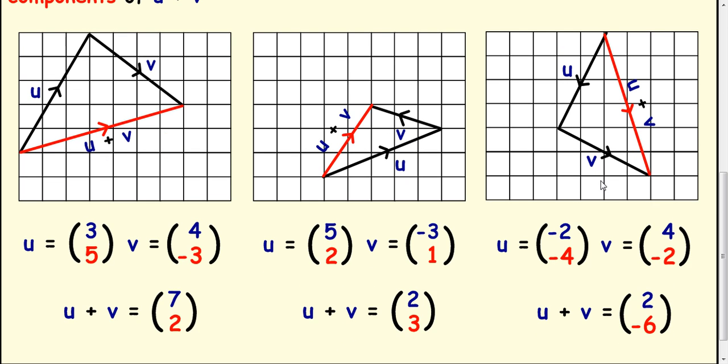So you can see the last one's the same here. You can just add the components, and you get negative two plus four, which is two. And negative four add negative two, which is negative six. So red line, two along and six down.